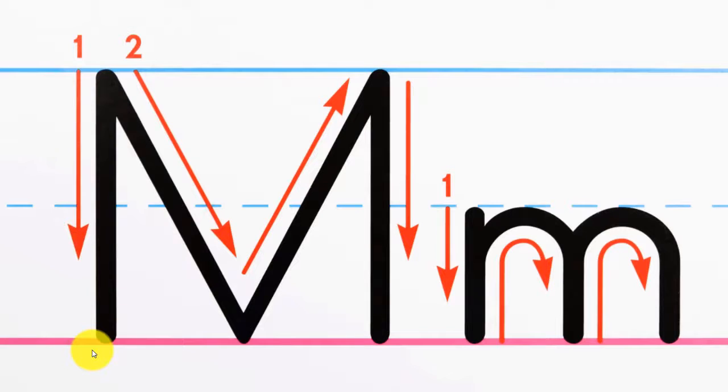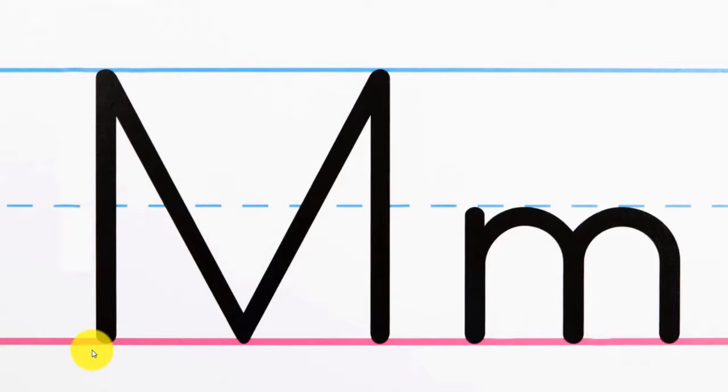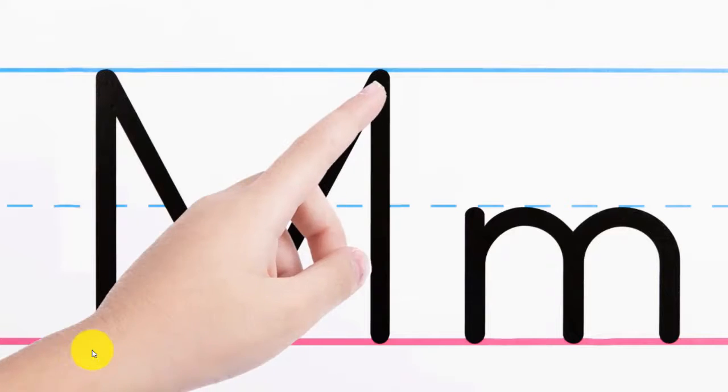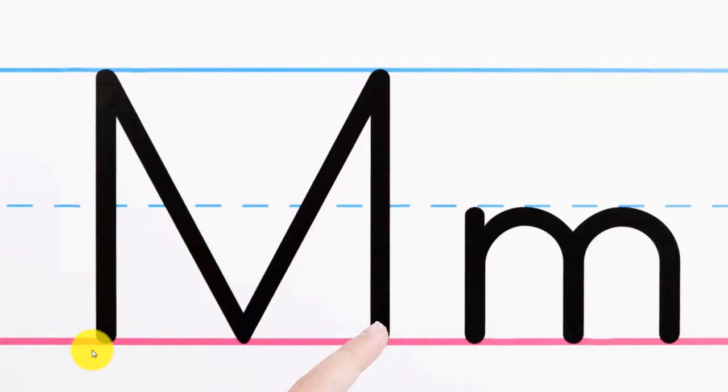Let's make the M's together. First, trace the capital or uppercase letter M with your finger. Now trace the lowercase m.